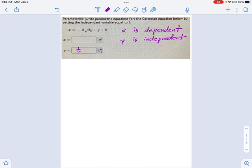And x is going to be the dependent variable, so we just replace all the y's with t. So negative 2t in there, plus t, plus 6. And that's it.